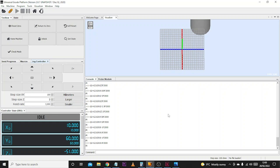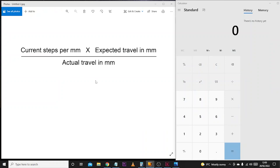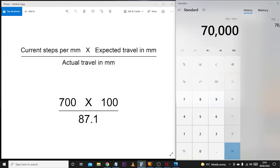Now we're back at the PC. I think it's more important to show you the manual way of doing this so you understand how it's calculated. The calculation is the current steps per millimeter, which was 700, times the expected travel in millimeters, which was 100, divided by the actual travel, which was 87.1 millimeters. So 700 times 100 equals 70,000, then divide that by 87.1. That gives us 803.673.